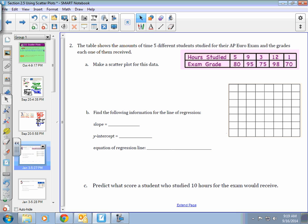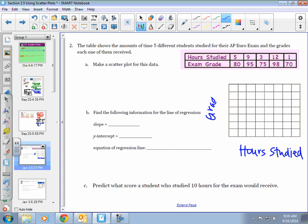Example two. The table shows the amounts of time five different students studied for their AP Euro exam, and the grades each one of them received. Part A says make a scatter plot for this data. My hours studied will go on my X axis. And the grade will go on my Y. If you look at the hours studied, it ranges from 1 to 12. I'm just going to count by twos.